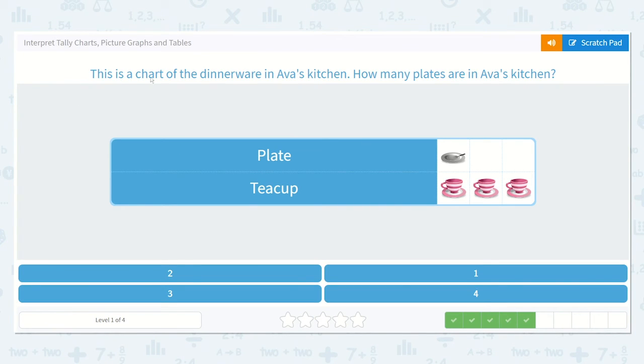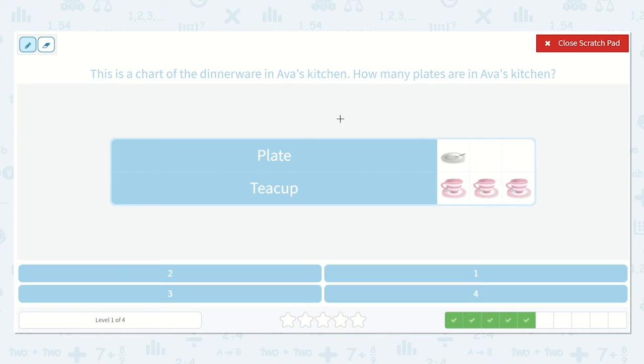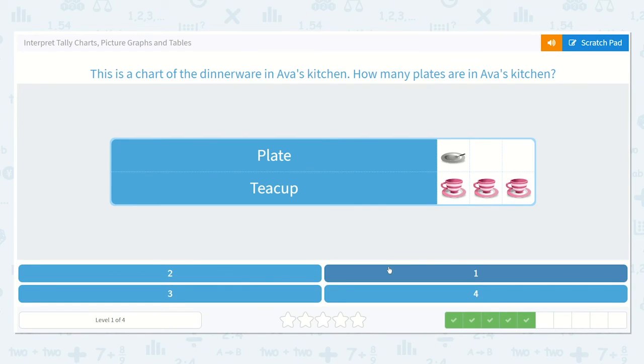This is a chart of the dinnerware in Ava's kitchen. How many plates are in Ava's kitchen? Well, I see the word plate here and the word teacup here. They asked us how many plates are in Ava's kitchen. So I see just one plate. So our answer is one.